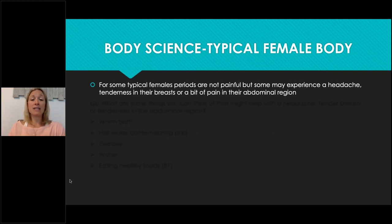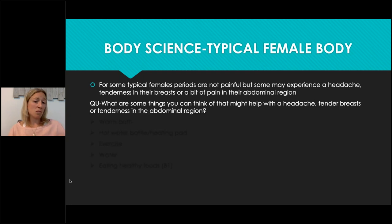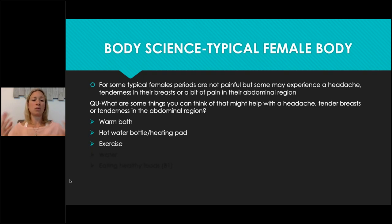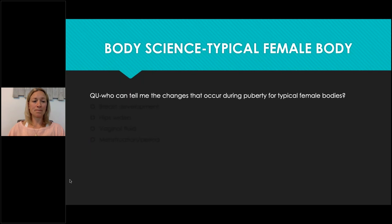For some, periods can be a little uncomfortable — the uterus is working to release that fluid. Students may experience a headache, breast tenderness, or abdominal pain. What can you do? A warm bath, a hot water bottle or heating pad, exercise — which produces oxytocin, dopamine, and other hormones that help us relax and feel good — staying hydrated, and eating healthy foods. Again, just repeating those ways we can keep ourselves healthy.